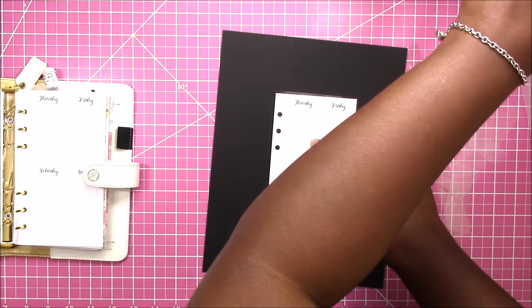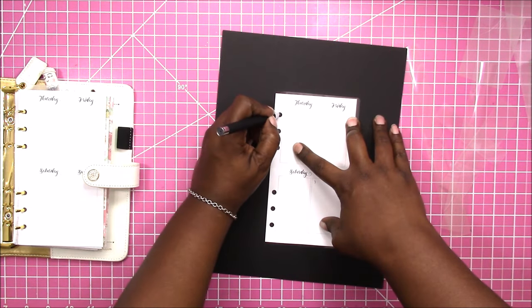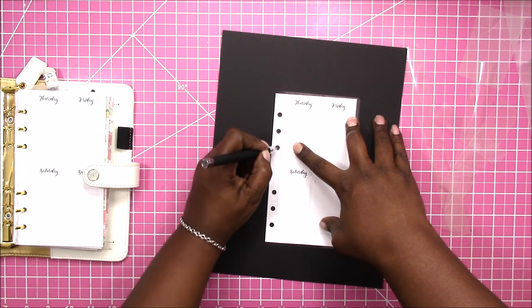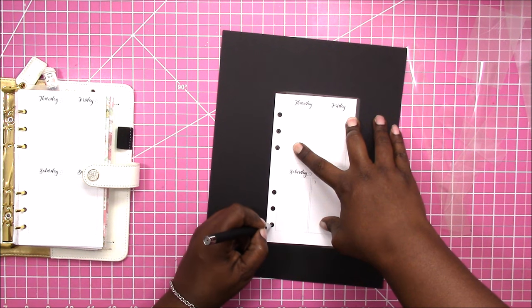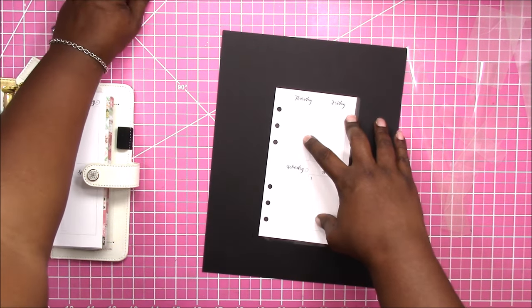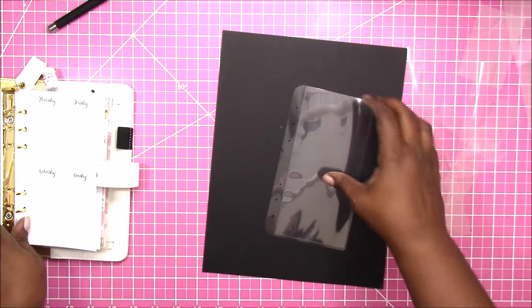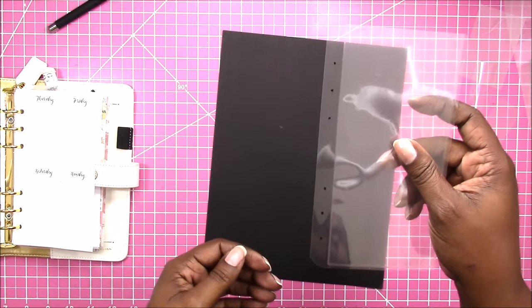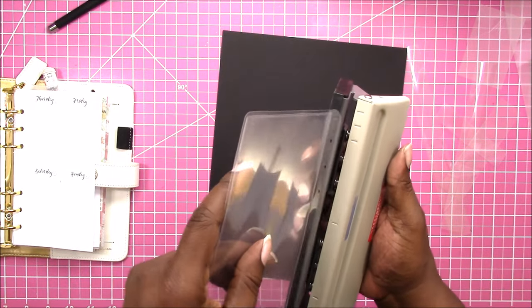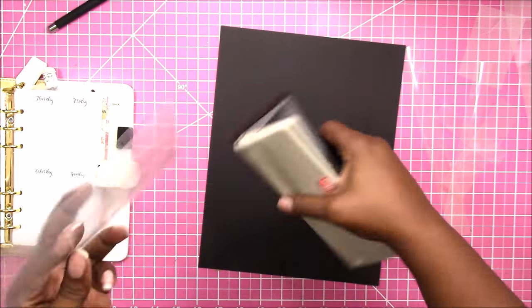And just use a manual hole punch to punch. You can just take your pen and mark your holes so that you know where to punch. So that's how you can do that if you don't have a hole punch. I'm going to go ahead and do the punch.